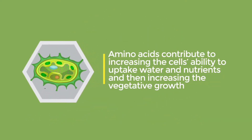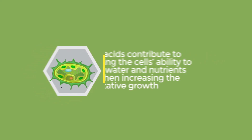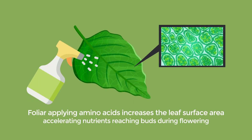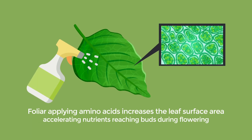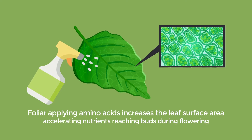Amino acids contribute to increasing the cell's ability to uptake water and nutrients, thereby increasing vegetative growth. Foliar applying amino acids increases the leaf surface area, accelerating nutrients reaching buds during flowering.